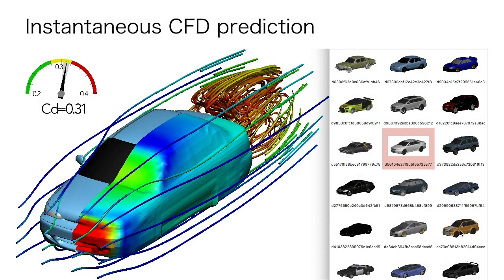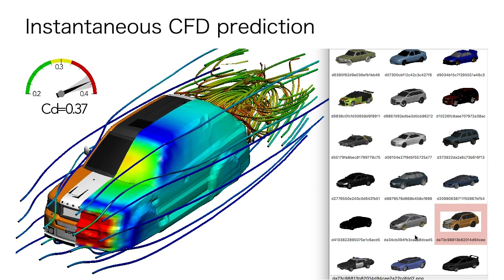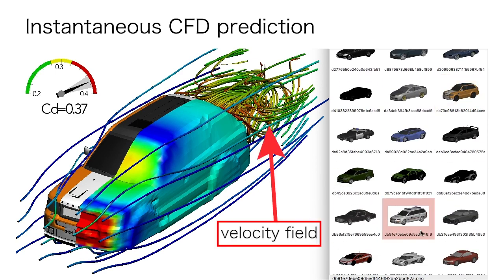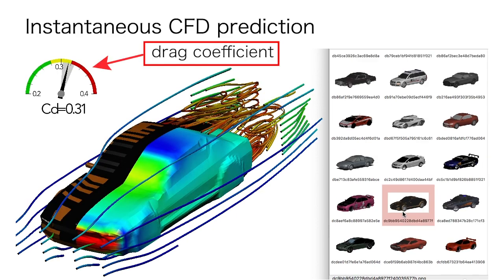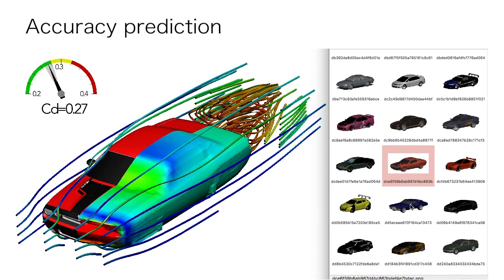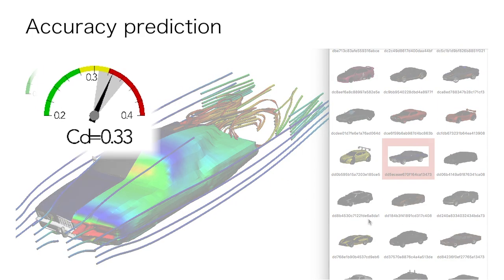Given a previously unseen new 3D shape as input, our tool predicts the velocity field around the shape, the pressure field on the shape, and its drag coefficient. Our tool also visualizes the accuracy of the prediction.